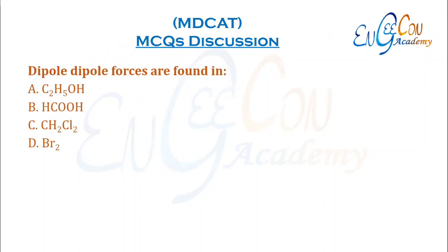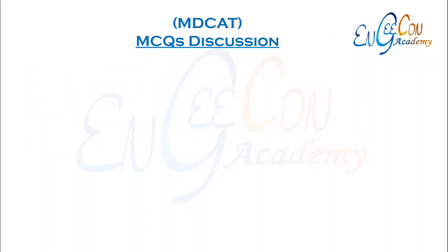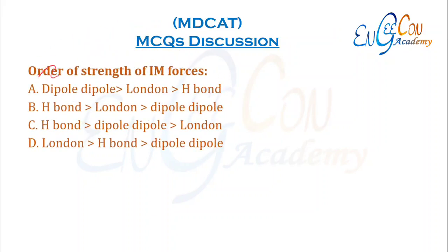Dipole-dipole forces are found in: alcohol and acid have hydrogen bonds. Bromine has London dispersion forces. The polar molecule has dipole-dipole forces. The order of strength of intermolecular forces is: hydrogen bond > dipole-dipole > London forces.